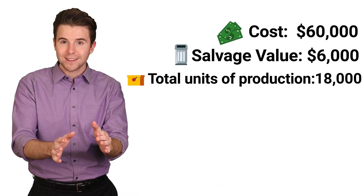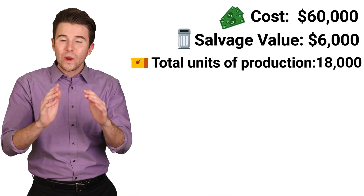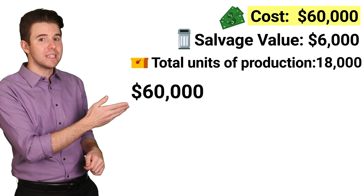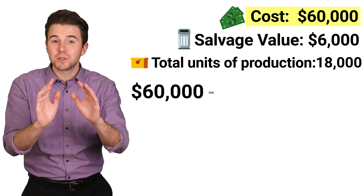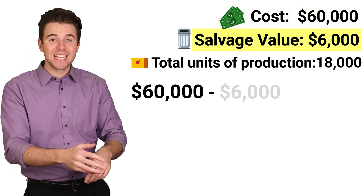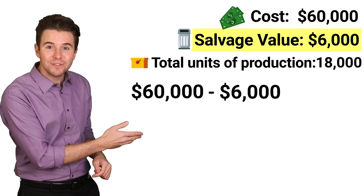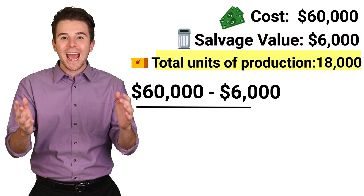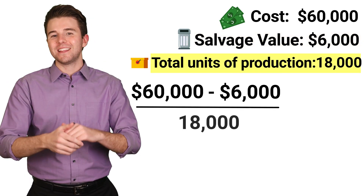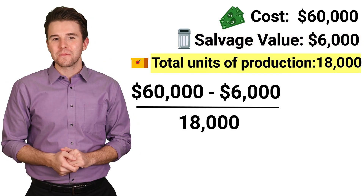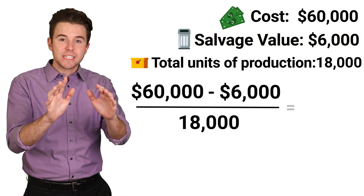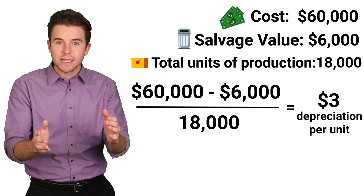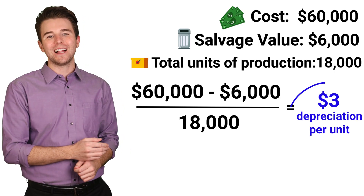To compute depreciation per unit, we take the machine's $60,000 cost, subtract the $6,000 salvage value, and divide that by 18,000 units. This gets us depreciation per unit of $3.